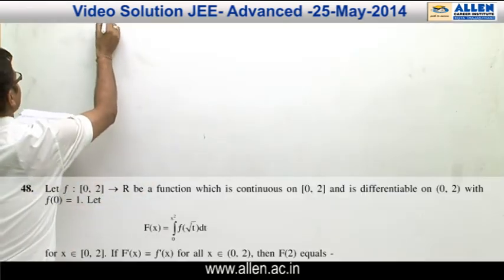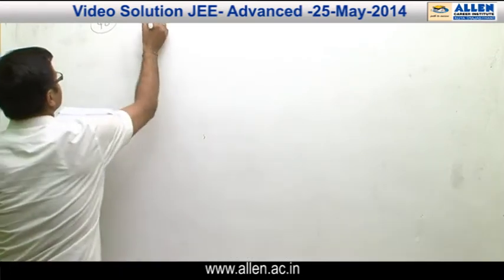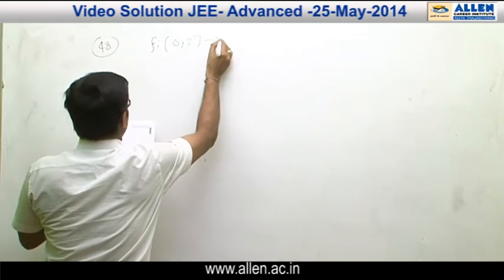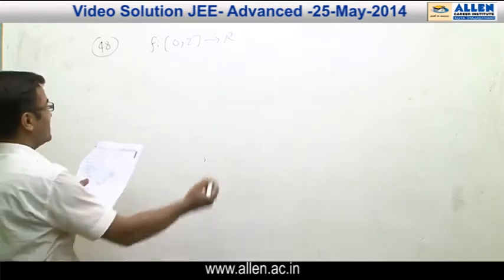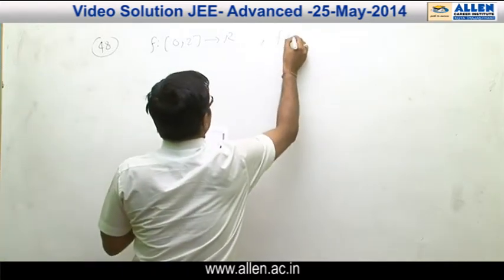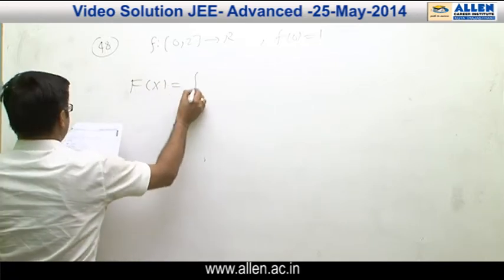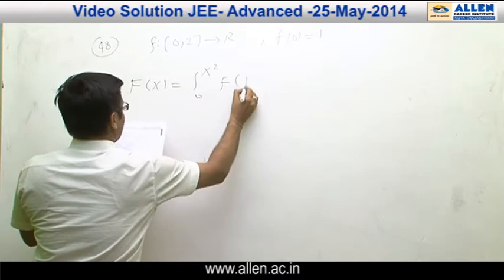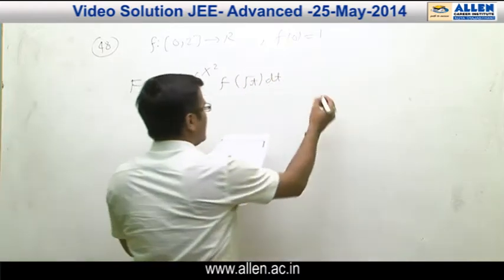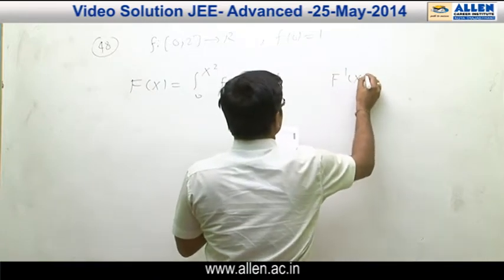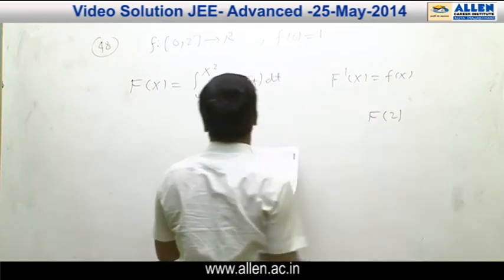Question 48. We are given that f is a function from [0,2] to R, continuous on [0,2] and differentiable on the open interval (0,2), with boundary condition f(0) = 1. Also given that f(x) equals the integral from 0 to x² of f(√t) dt, and f′(x) = f(x). We have to find the value of f(2).